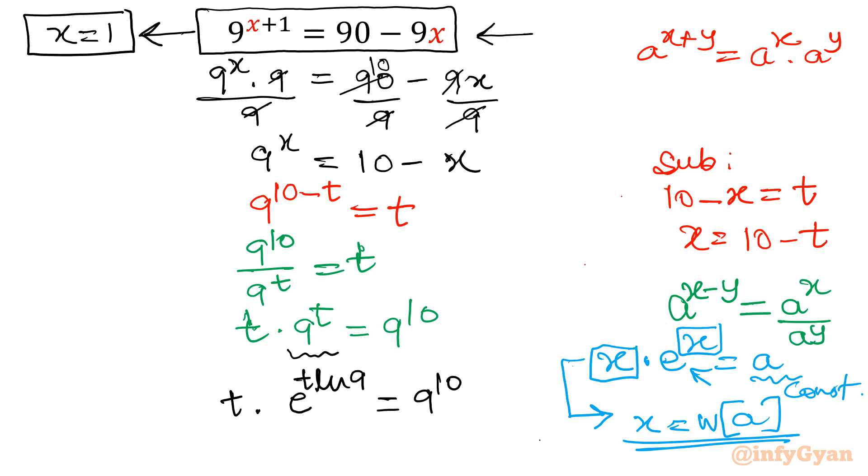Now you can easily see what is missing. That is ln 9. If I will multiply both sides by ln 9 you can see it is same. So using Lambert W I will consider left hand side as t ln 9 which will be equal to Lambert W function of 9 power 10 ln 9.